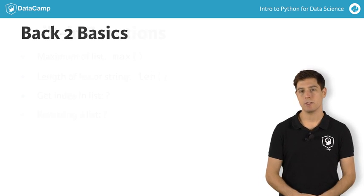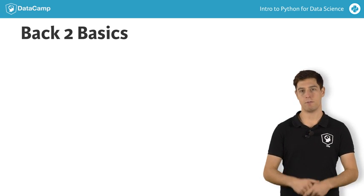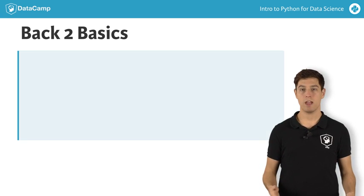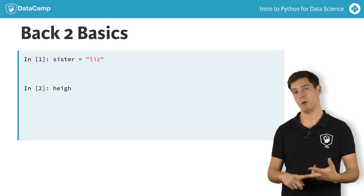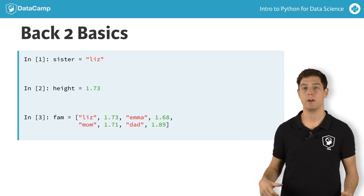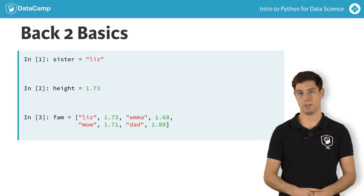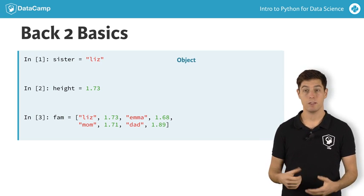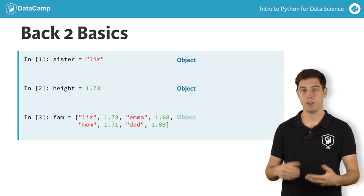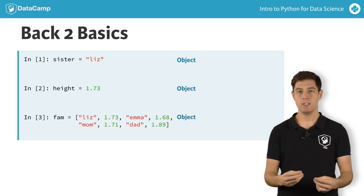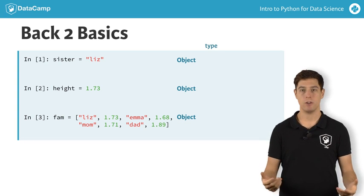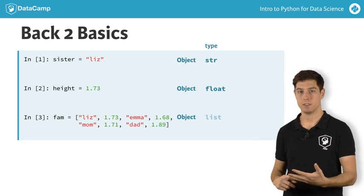In the past exercises, you've already created a bunch of variables. Among other Python types, you've created strings, floats, and lists, like the ones you see here. Each one of these values, or data structures, are so-called Python objects. This string is an object, this float is an object, but this list is also an object. These objects have a specific type that you already know: string, float, and list.